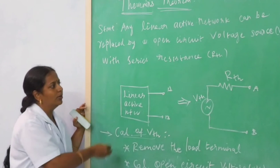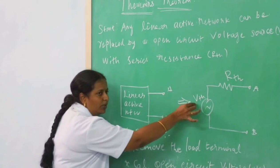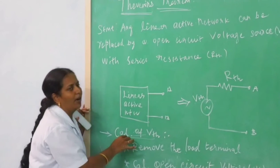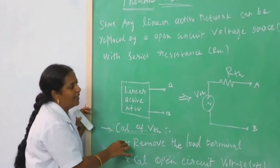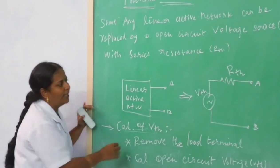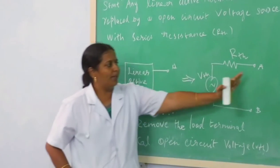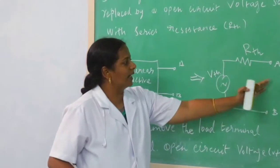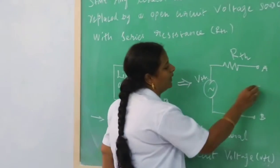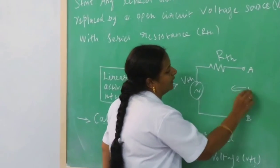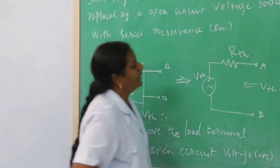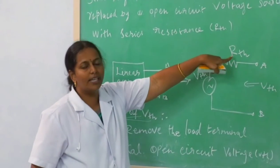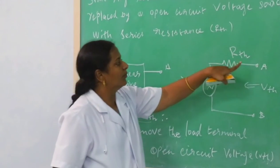Whatever may be the network, it can be entirely replaced by an open circuit voltage source, that is V Thevenin, with series resistance as R Thevenin. For the calculation of open circuit voltage source — that is V Thevenin — we have to follow steps. First, we have to remove the load terminal, then calculate V Th.